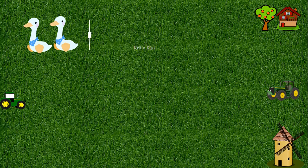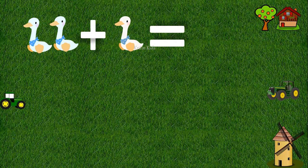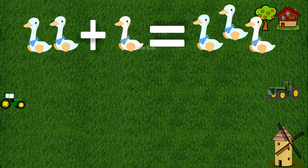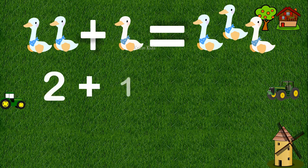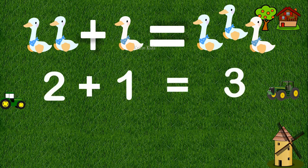Now we have two ducks. Let's add one more duck to them. Two ducks plus one duck equals three ducks. This means two plus one equals three.